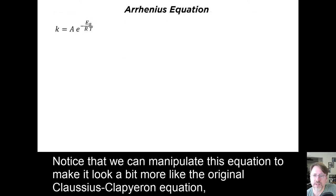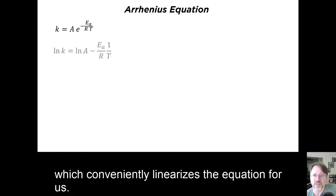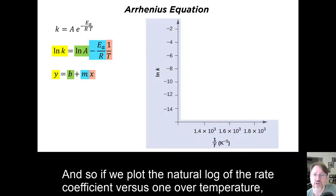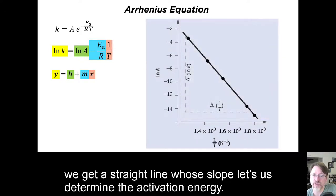Notice that we can manipulate this equation to make it look a bit more like the original Clausius-Clapeyron equation, which conveniently linearizes the equation for us. And so, if we plot the natural log of the rate coefficient versus 1 over temperature, we get a straight line, whose slope lets us determine this activation energy.